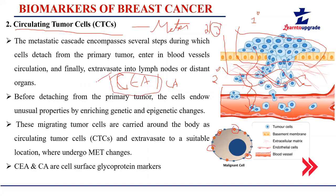Circulating tumor cells serve as one of the most important biomarkers when all three receptors are negative, and this diagnostic approach is growing rapidly. Even after radiotherapy or chemotherapy, reoccurrence of cancer can be seen within two to three years in some patients, driven by the cancer stem cell expansion property. Circulating tumor cell detection allows early identification of such recurrence.